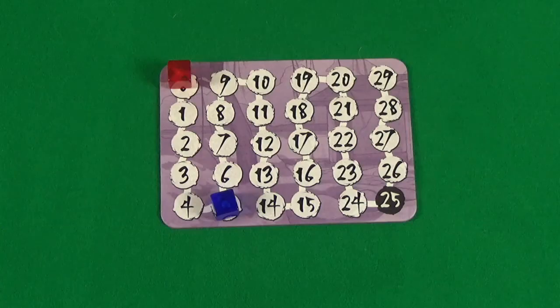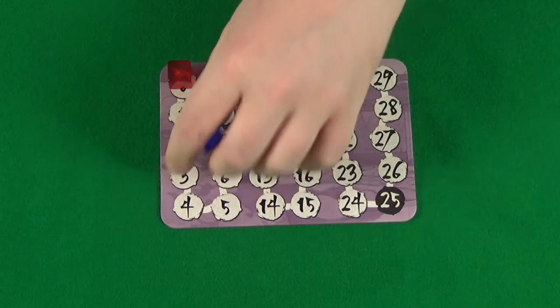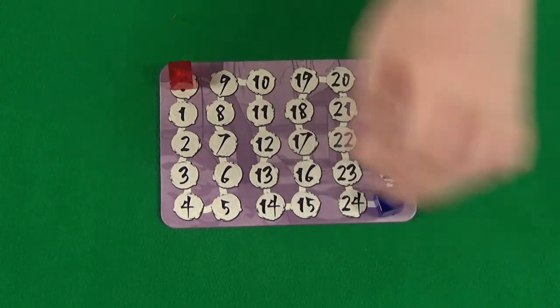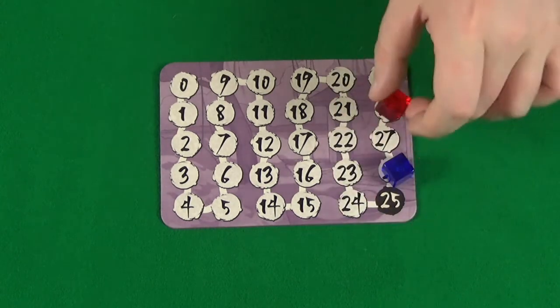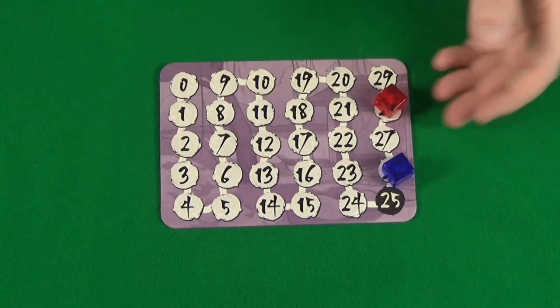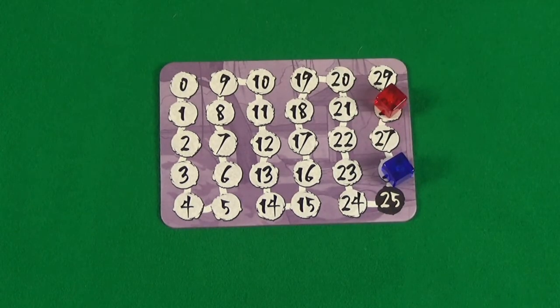And that's the game. You keep playing rounds in this way, with the dealer passing to the left, until someone's score reaches 25 or more. You then finish that round, and whoever has the highest score at the end of that round wins the game.